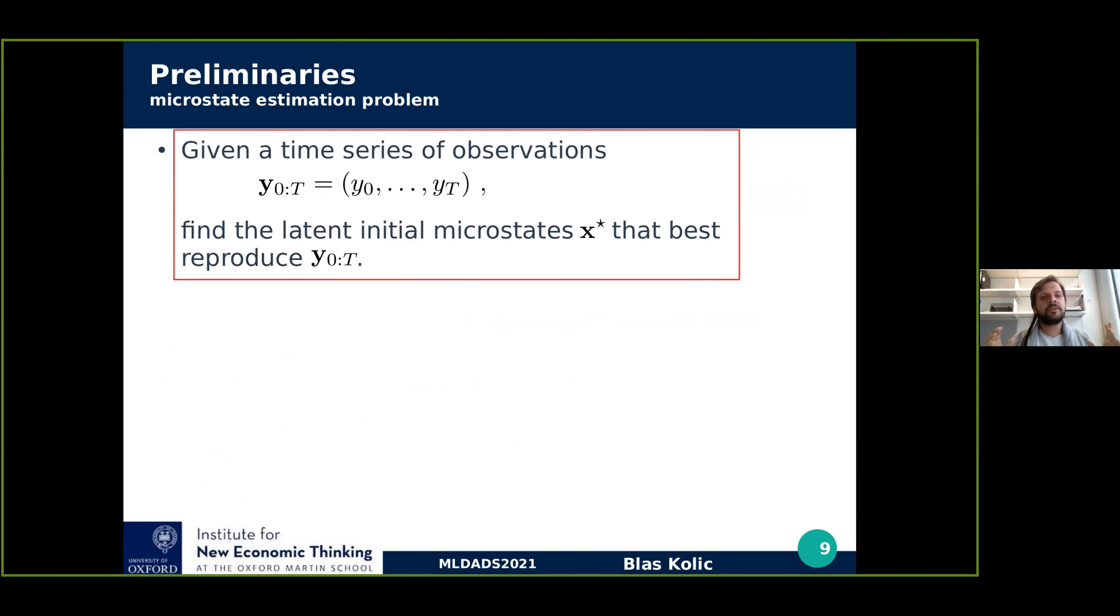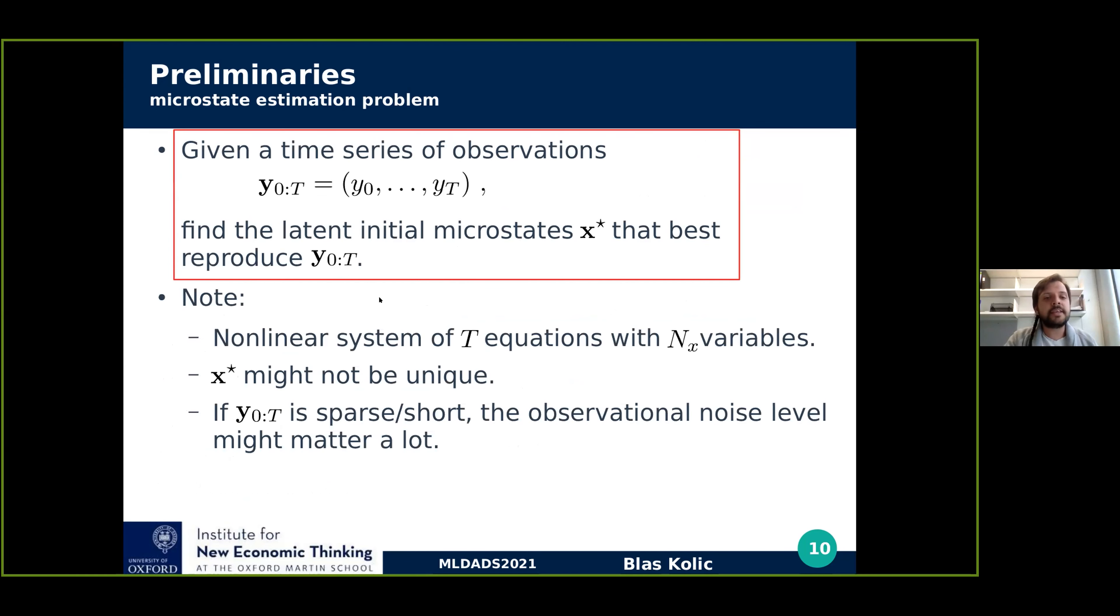The microstate estimation problem is this: given a time series of observations from y0 to yt, is finding the latent initial microstates, x star, that best reproduce the observations. Note that this defines a non-linear system of t equations, being the observations, with nx variables, nx being the dimension of the unknown microstates. These microstates, therefore, might not be unique. And actually they might be microstates which are even better than the ground truth, meaning that they reproduce the observations more exactly. We're going to consider short time series. In short time series, the observational noise levels might matter a lot. So we have to do something about that.